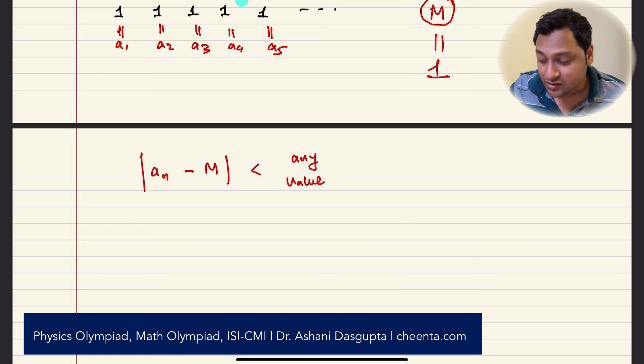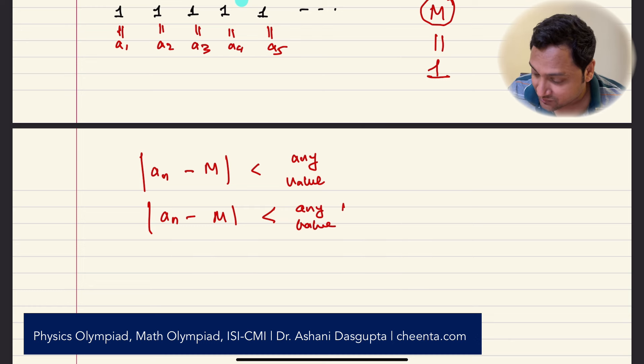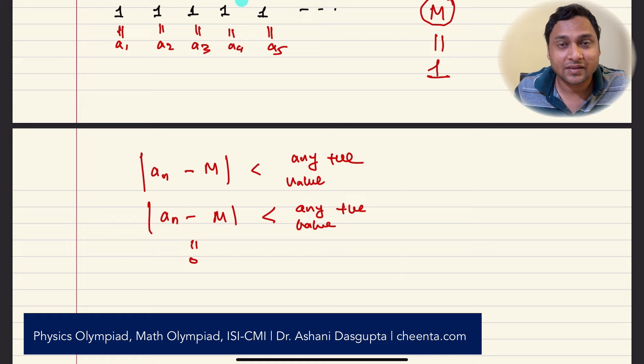If you just have M equal to 1, then AN minus M is smaller than any value because any positive value, because AN minus M is just 0 and 0 is smaller than all positive quantities. So the limit is M, that mysterious number to which you can get arbitrarily close is 1.